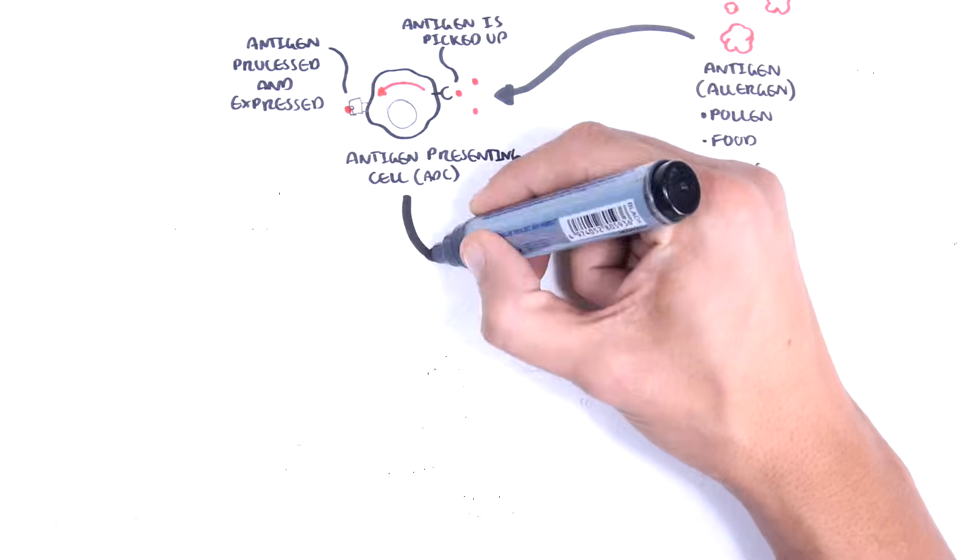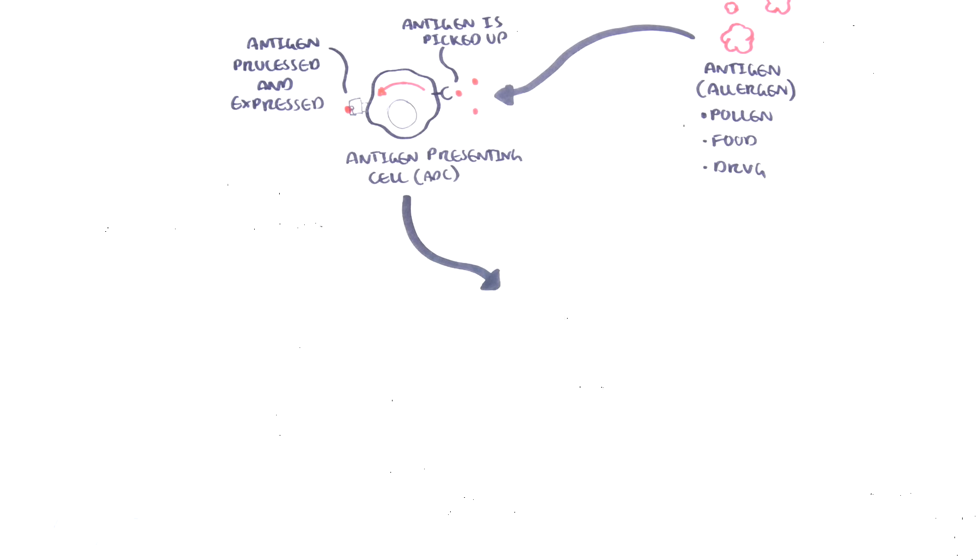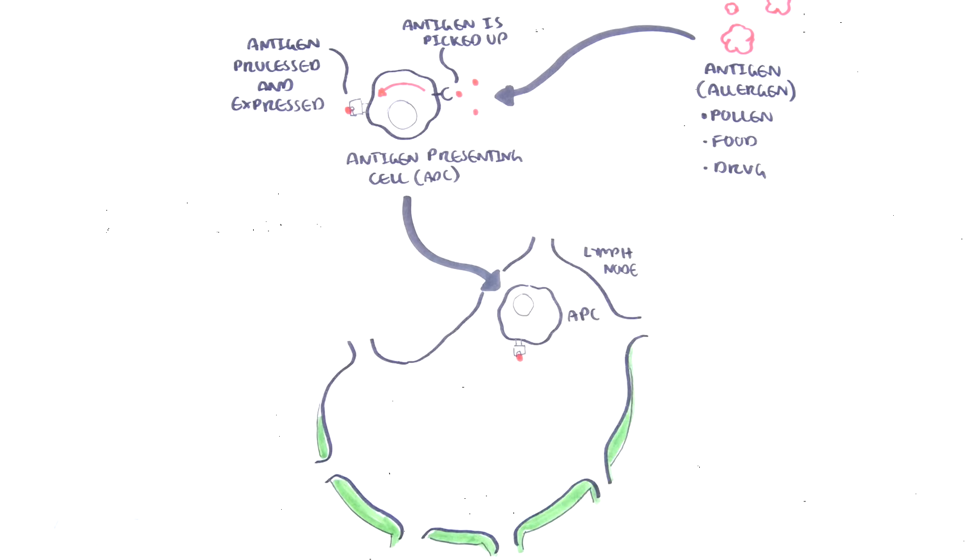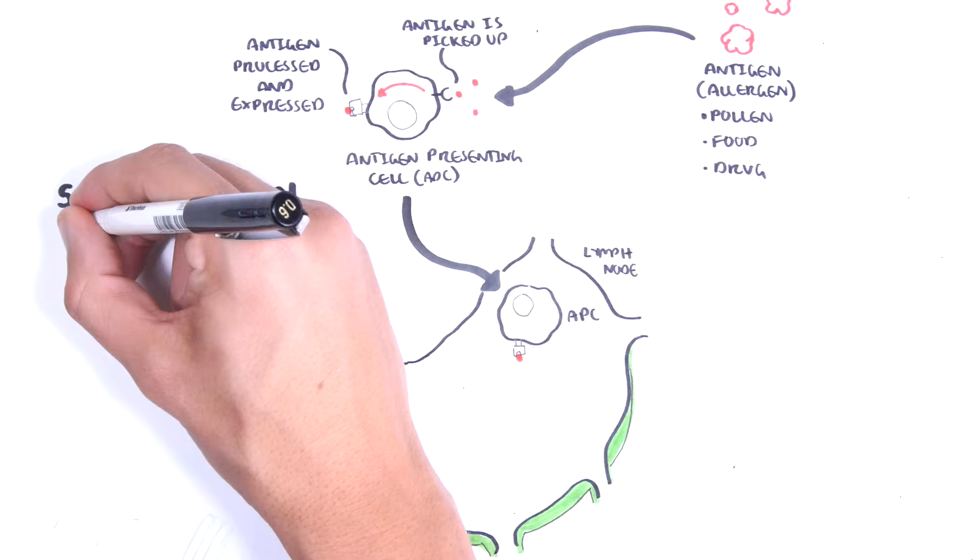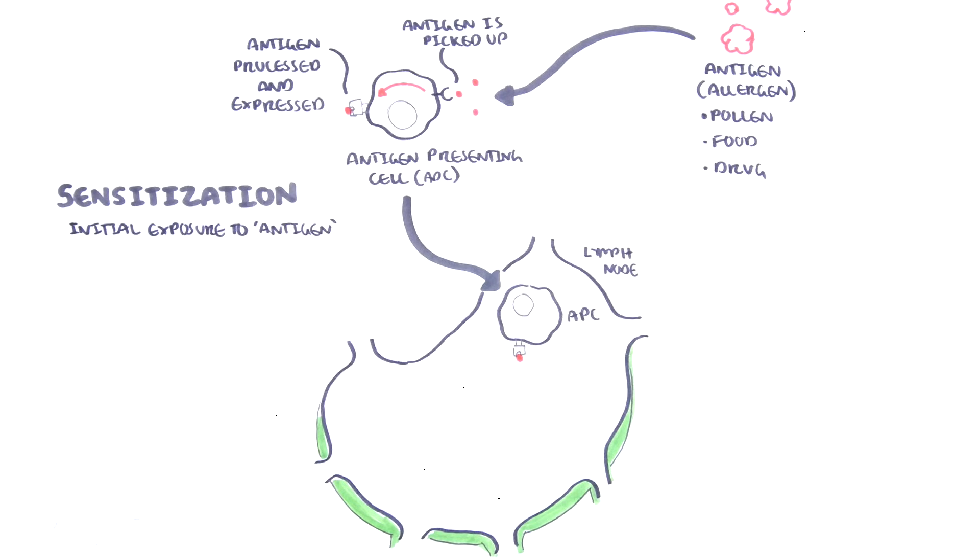From here, the antigen-presenting cell will carry the allergen to nearby lymphoid tissue, such as a lymph node, where the process of sensitization begins. And again, sensitization occurs from the initial exposure, first contact, to a particular antigen.